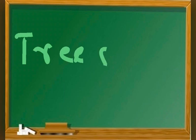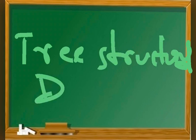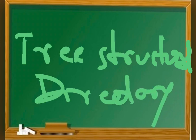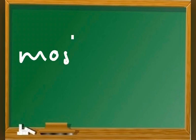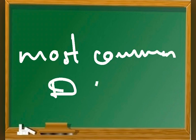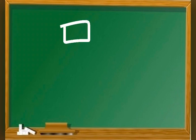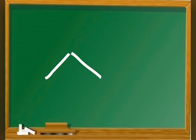Now we'll discuss the tree structure directory. The tree structure is the most common directory structure. The tree has a root directory and every file in the system has a unique path name. We will discuss this concept using a diagram.